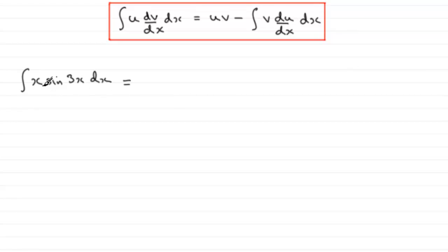So for this question, we let x be the u part and the sine 3x be the dv by dx part. So when it comes to integrating this, we just say we've got one part, the u part, and we multiply it by the integral of the other part.